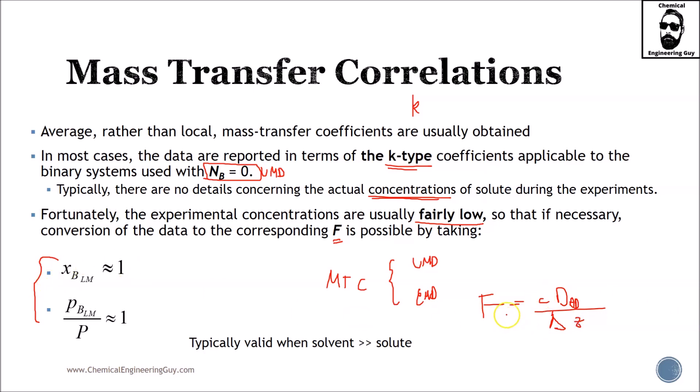Recall that for UMD case, we have a log mean value, and we also recall that if the solvent was much greater in quantity than the solid, we can assume that the log mean value is relatively near to 1, and if this is true, then we get a F value, which applies for both cases, UMD and EMD.